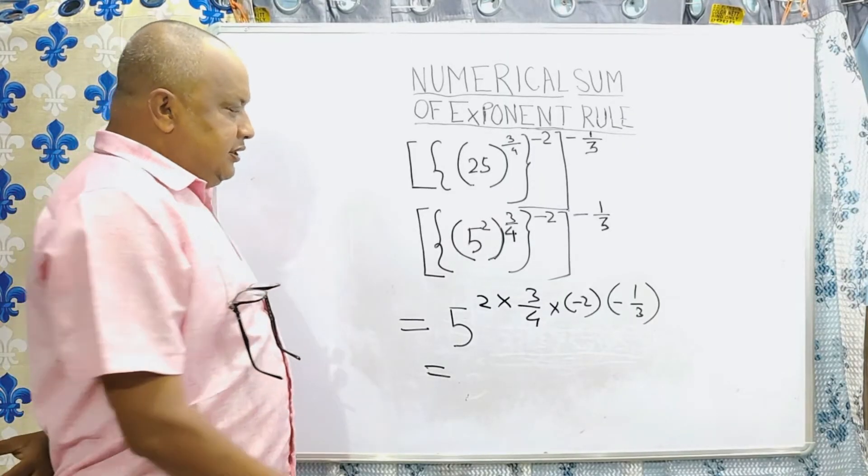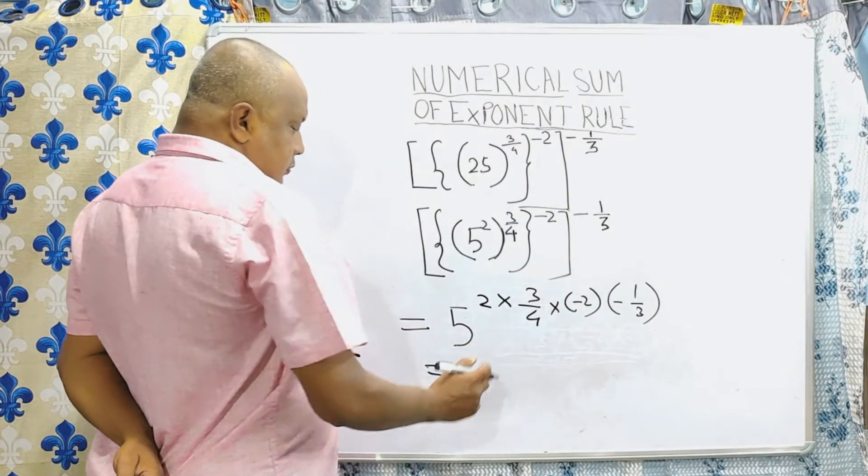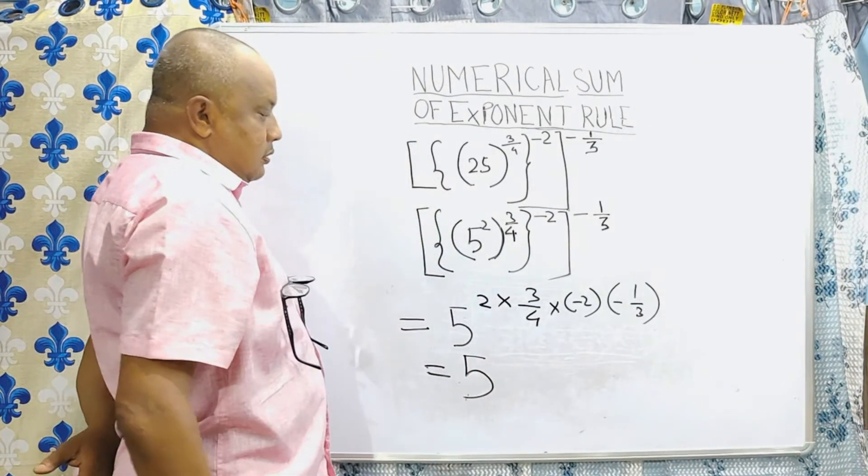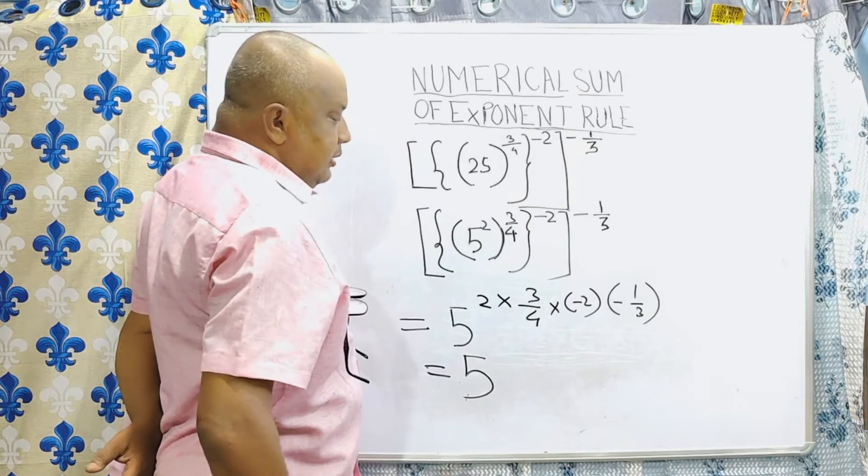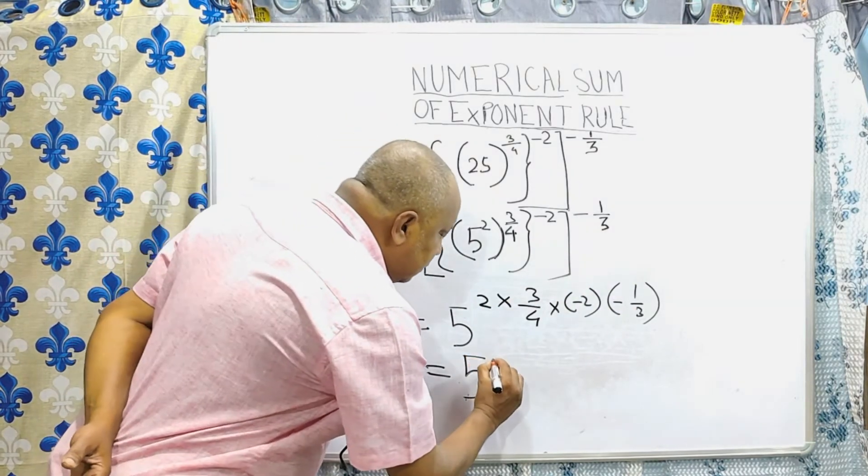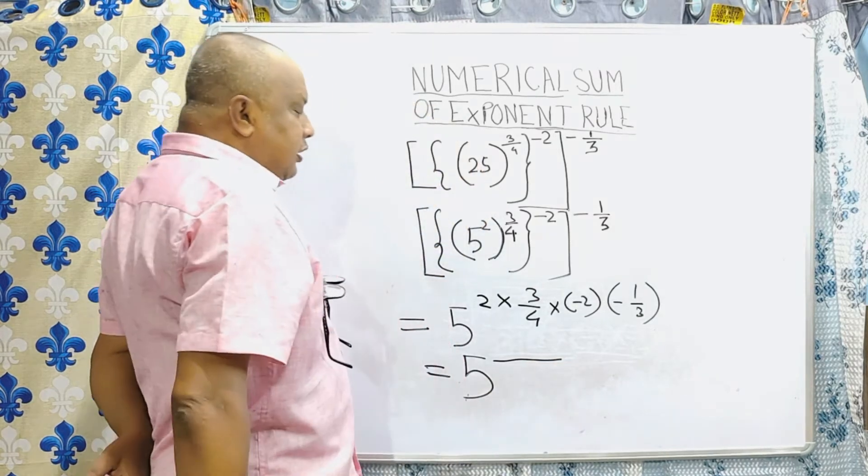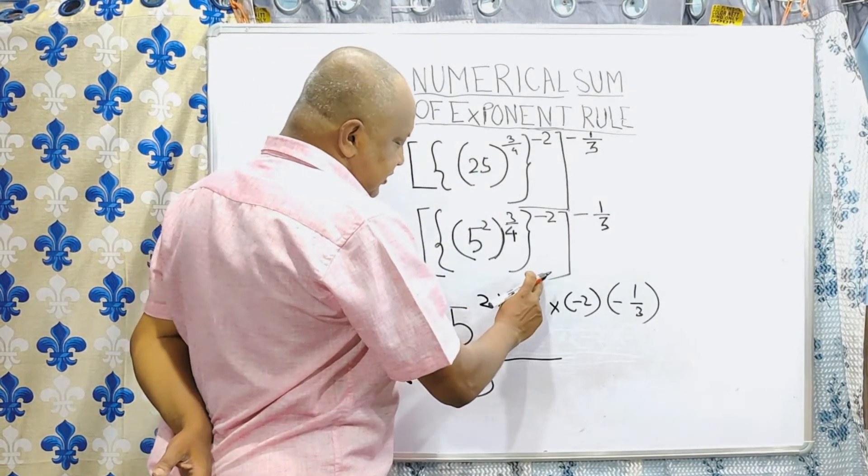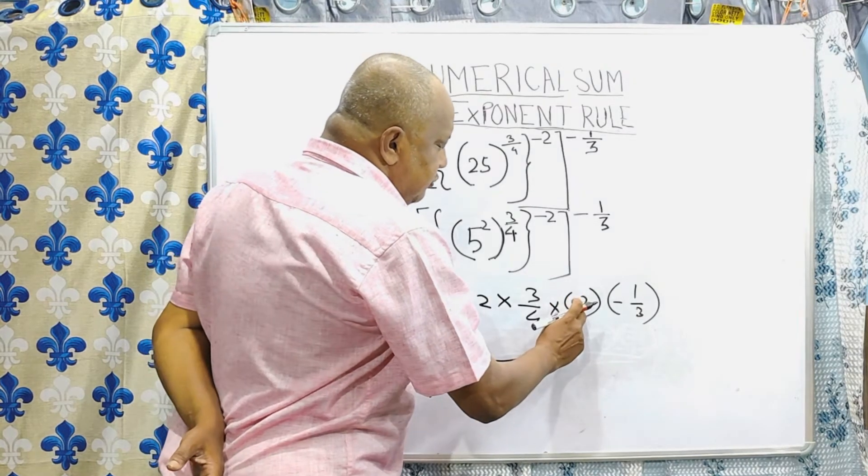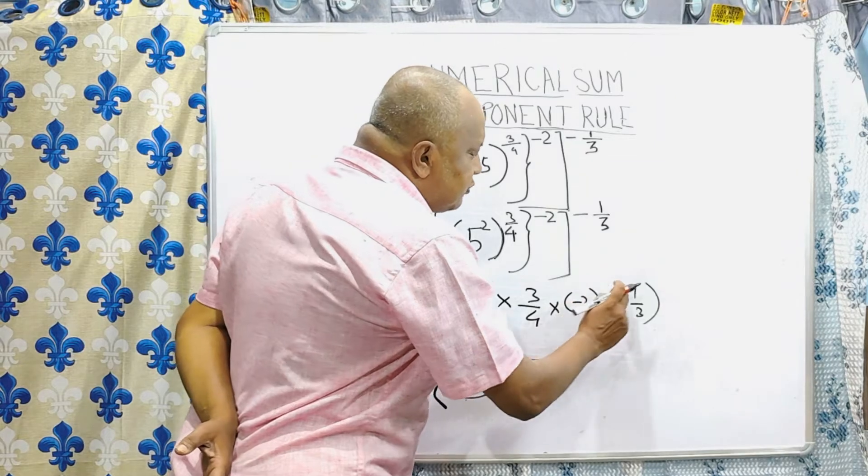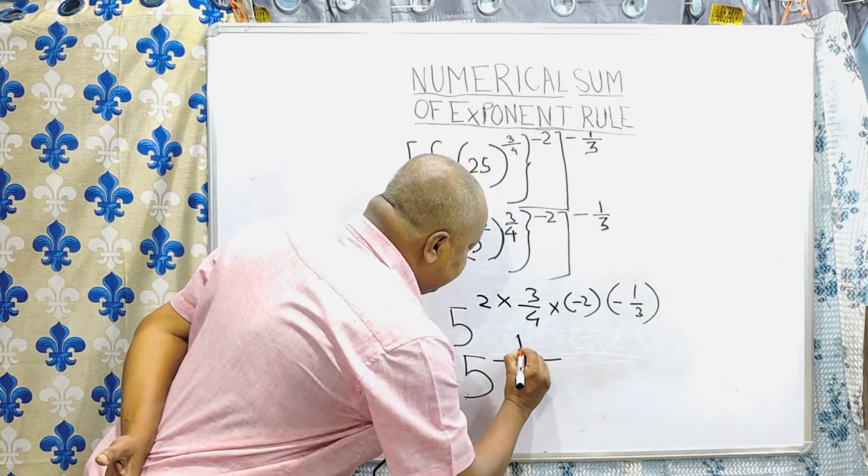To solve this question, we will have to take all numerators multiplied and all denominators are multiplied. First of all we multiply all numerators. Numerators are 2, 2 into 3 is 6. 6 into minus 2 is equal to minus 12. Minus 12 into minus 1 is equal to plus 12.